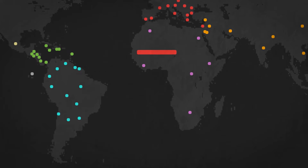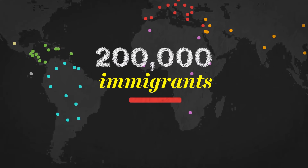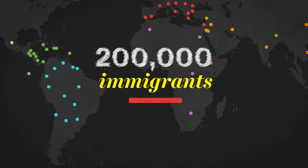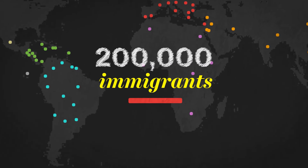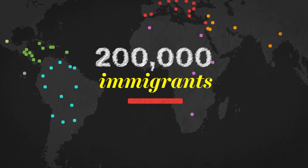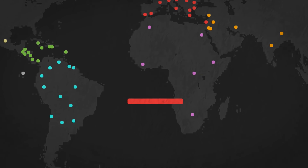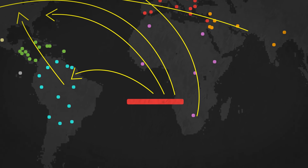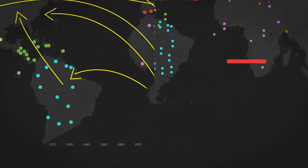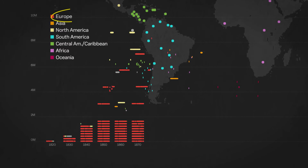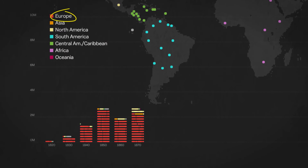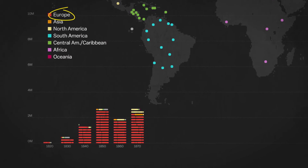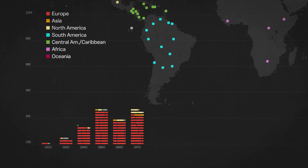This line represents 200,000 legal immigrants to the U.S., and we're going to stack them up to see when they came to the U.S. and where they came from. So early on, most were European — largely Irish, German, and British — and there were also Chinese and Canadian immigrants.